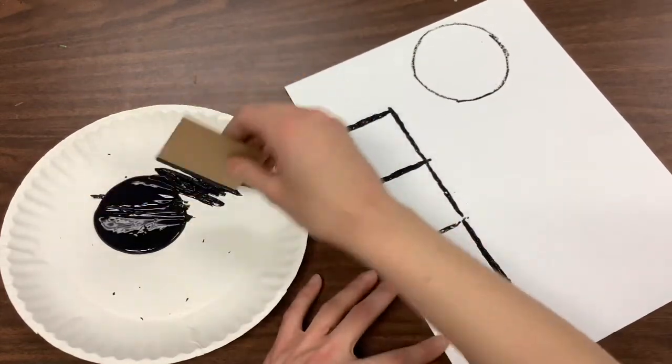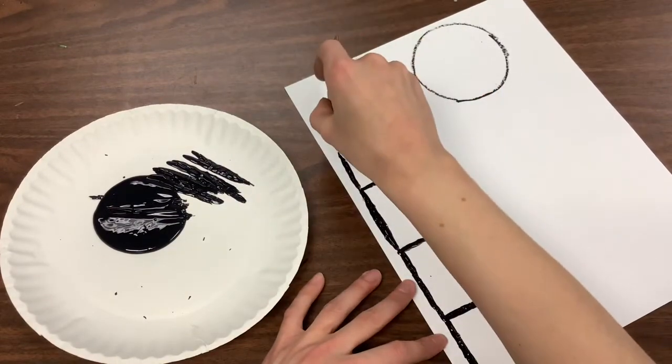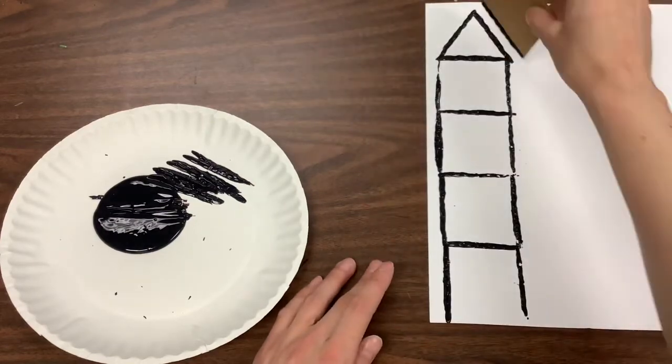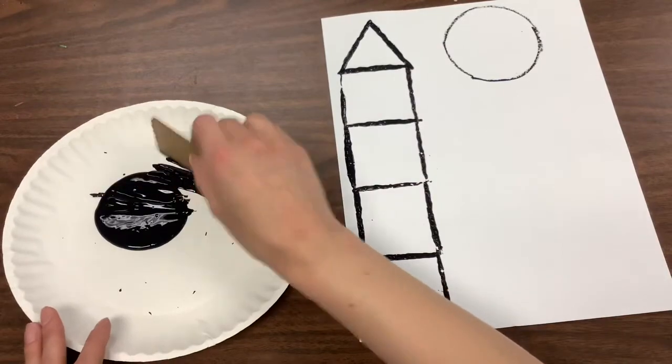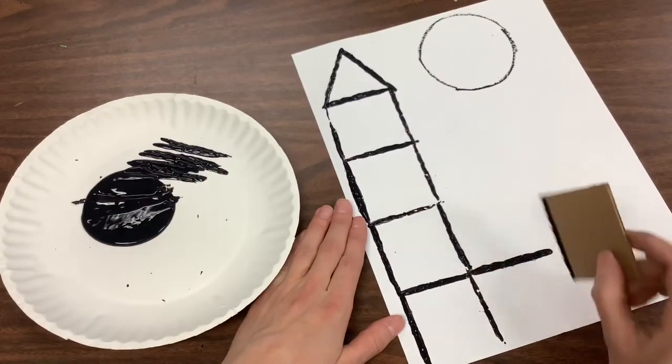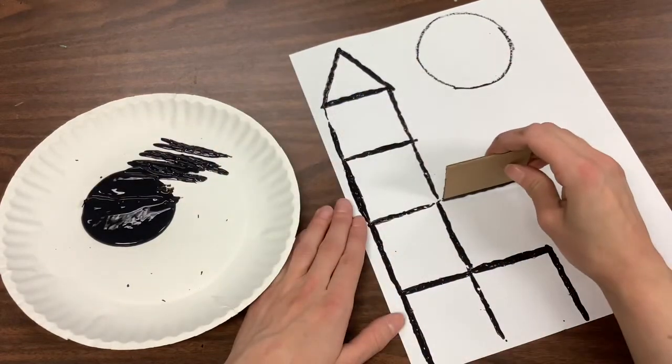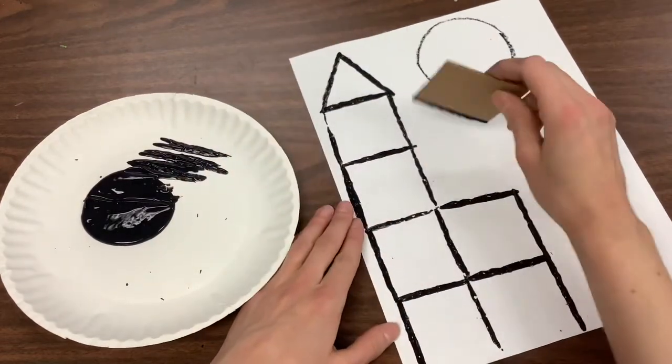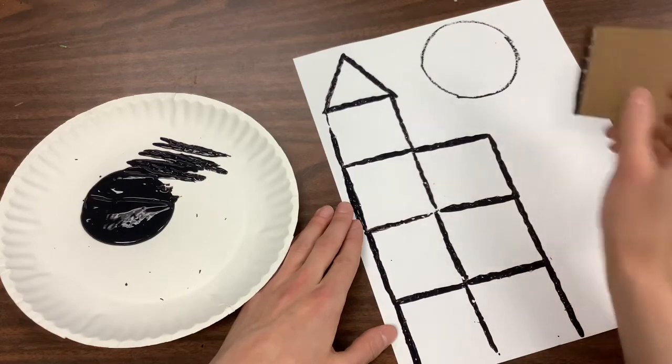Then I am going to maybe even add a roof, a triangle roof on top by just going diagonally with my cardboard. Then I can start to build another tower right next to it. It's okay if your lines aren't perfectly straight. Every castle will be different.